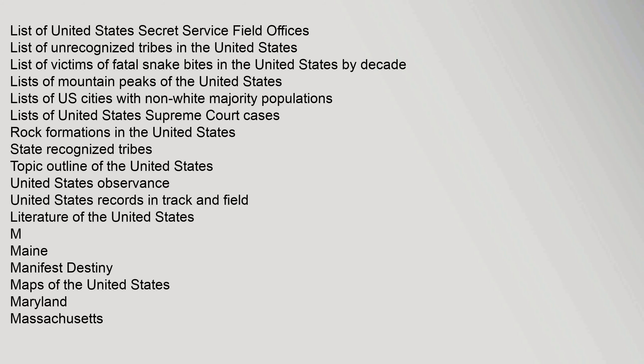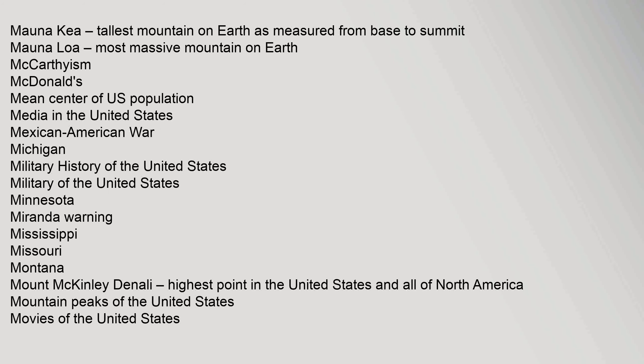Literature of the United States. M: Main, Manifest Destiny, Maps of the United States, Maryland, Massachusetts, Mauna Kea — tallest mountain on Earth measured from base to summit — Mauna Loa — most massive mountain on Earth, McCarthyism, McDonald's, Mean Center of U.S. Population.